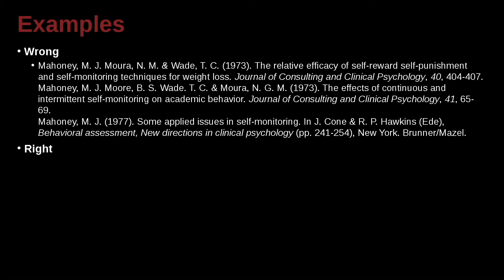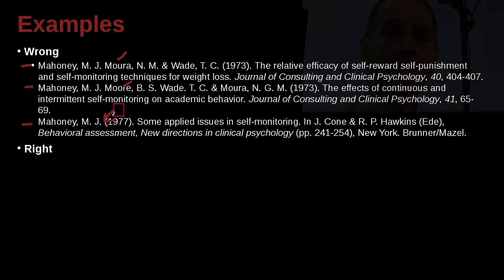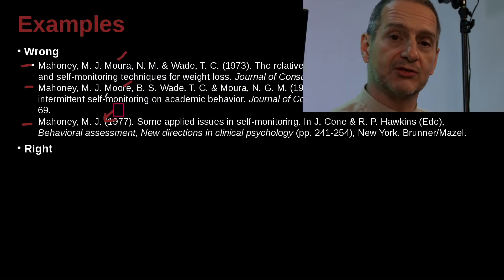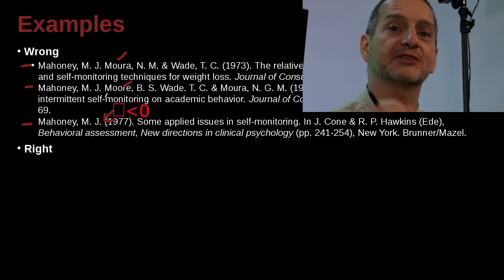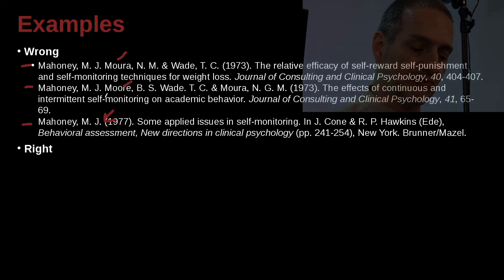Let's look at another example. We've got Mahoney, M.J.; Mahoney, M.J.; and Mahoney, M.J. — a lot of the same author. However, once we get down to the second author, things are different. The second author here is Moore, here is Moore, and here it's empty. Remember, when you make a list, empty comes before something. If it's empty, that is less than zero — smaller than A. That's a key point to remember.